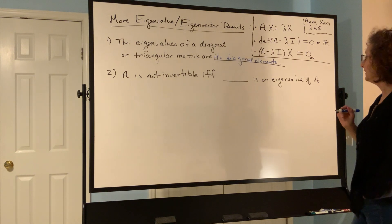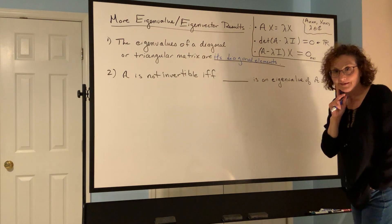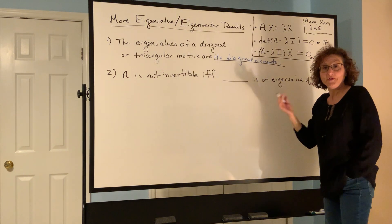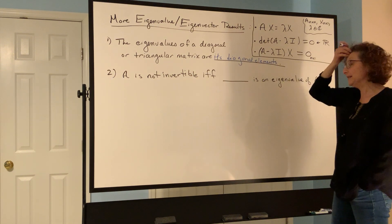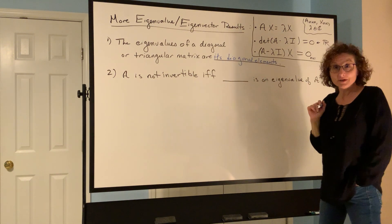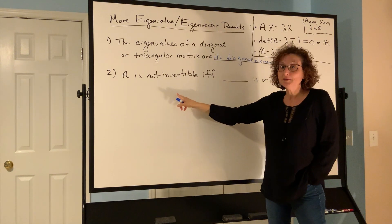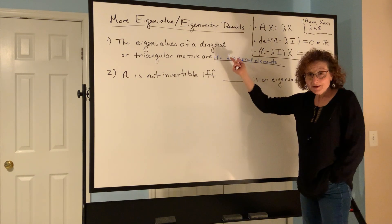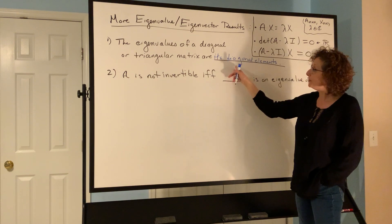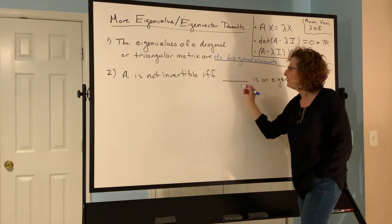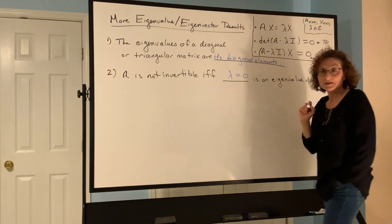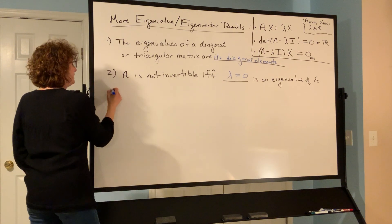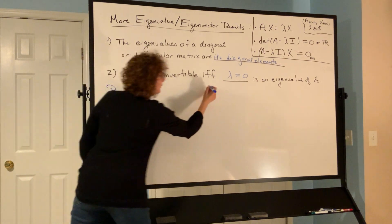A is not invertible if and only if zero is an eigenvalue of A. In a simple case, if we had a diagonal matrix where the determinant of A is zero and we have a zero on the diagonal, then that zero is an eigenvalue and it causes the entire determinant to be zero. Let's prove this — it's an if-and-only-if statement, so it goes both directions.